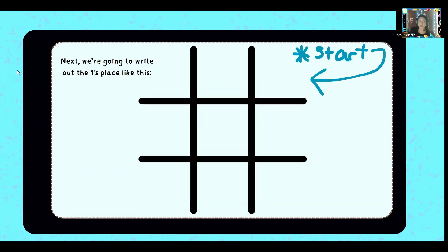We're going to write out the ones places. We'll start up here in the top right corner. Begin with the number one. Then next door, two. Next door, three. Four, five, six, seven, eight, nine.